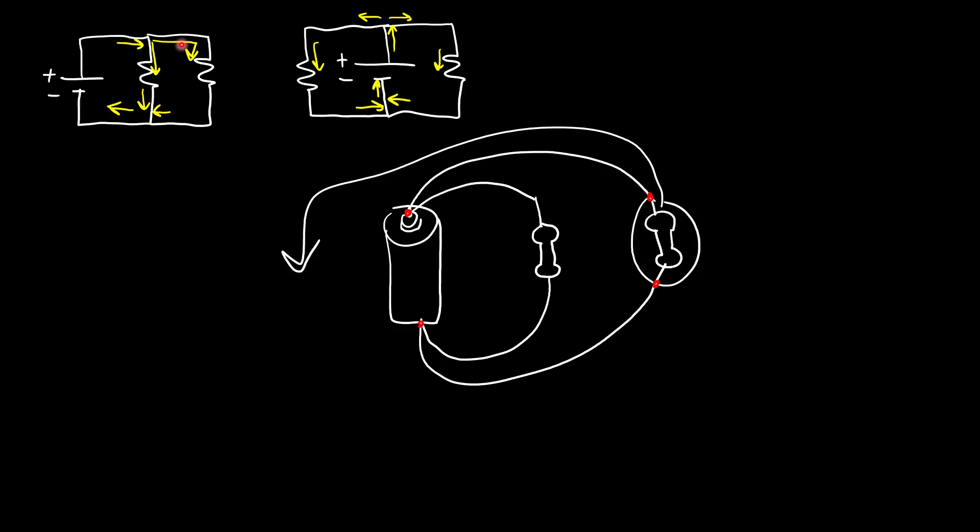So again, usually when you see things in introductory textbooks, they're usually drawn with the battery or power source on the left and things kind of flow from left to right. So it can kind of trip you up when things are rotated or moved around, but you have to be careful to find out if the electrical connections are all equivalent and the circuit is actually the same.